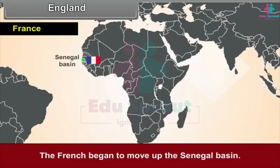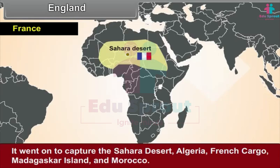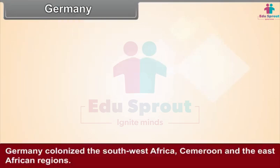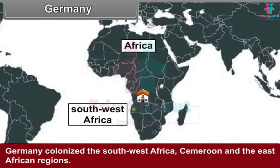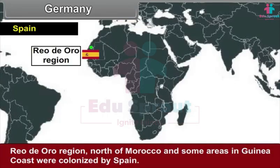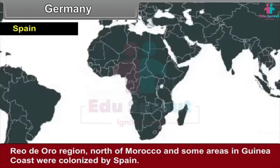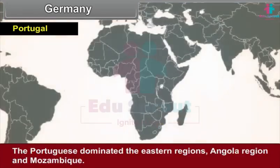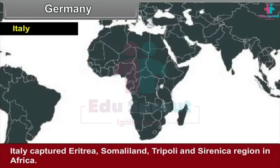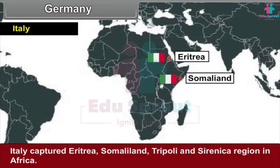France began to move up the Senegal basin. It went on to capture the Sahara Desert, Algeria, French Congo, Madagascar Island and Morocco. Germany colonised South West Africa, Cameroon and the East African regions. The Rio de Oro region, north of Morocco, and some areas in the Guinea coast were colonised by Spain. The Portuguese dominated the eastern regions, Angola region and Mozambique. Italy captured Eritrea, Somaliland, Tripoli and Cyrenaica regions in Africa.